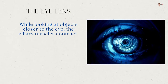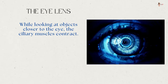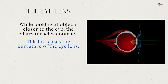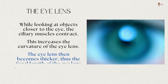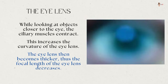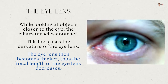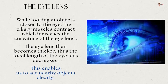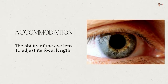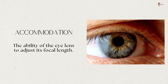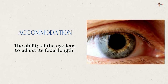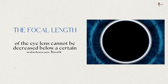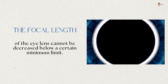When looking at objects closer to the eye, the ciliary muscles contract. This increases the curvature of the lens, making it thicker. Consequently, the focal length of the lens decreases, enabling us to see nearby objects clearly. The ability of the lens to adjust its focal length is called accommodation. However, the focal length of the lens cannot be decreased below a certain minimum limit.